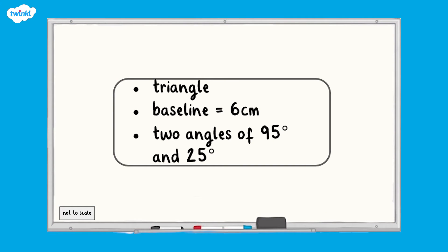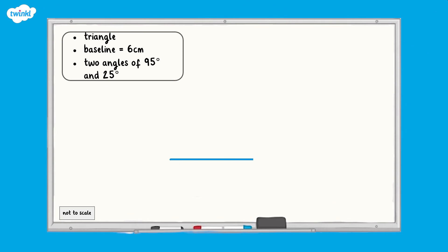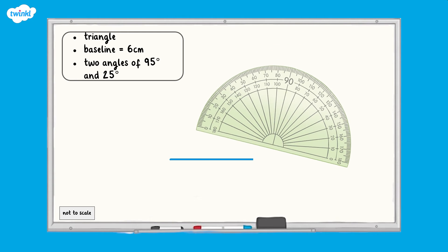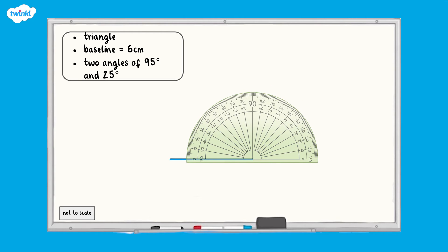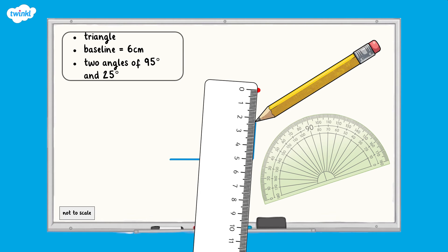Now let's look at how we can draw a triangle accurately on plain paper. The triangle needs to have a baseline of six centimetres and two angles of 95 degrees and 25 degrees. First, let's draw the baseline of six centimetres. To draw the two angles accurately we need to use a protractor. Place the origin or centre point of the protractor carefully at one end of the line. We will draw the angle of 95 degrees first, using the outer scale of the protractor which begins at zero on our line. Place a dot at 95 degrees, then remove the protractor.